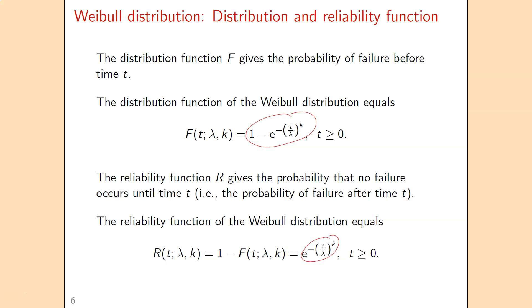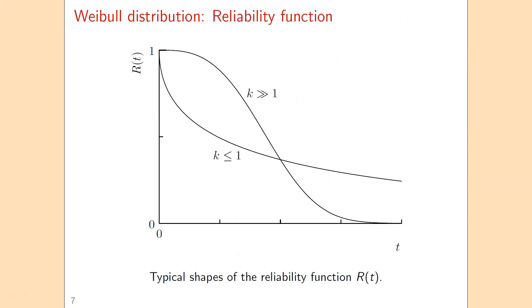This is the definition of the Weibull reliability function, dependent on the parameters of the Weibull distribution. There are two typical shapes: if k is significantly larger than 1, we get one shape, and if k is equal to 1 or smaller than 1, the typical shape of the Weibull reliability function is different.